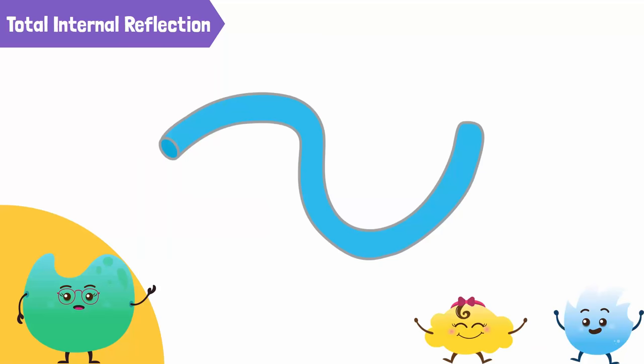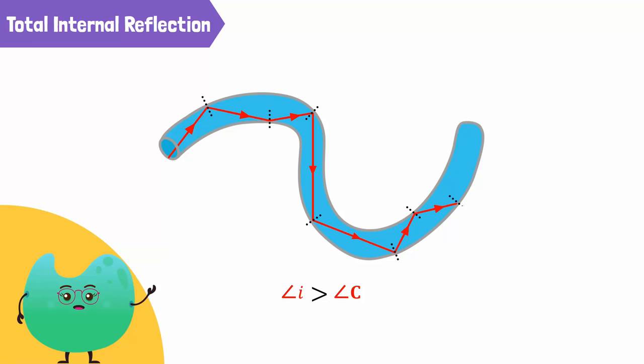Going back to the example of the optical fiber, the light ray hits the inside surface of the wall of the optical fiber at an angle greater than the critical angle. Due to this, the light ray reflects within the same medium.